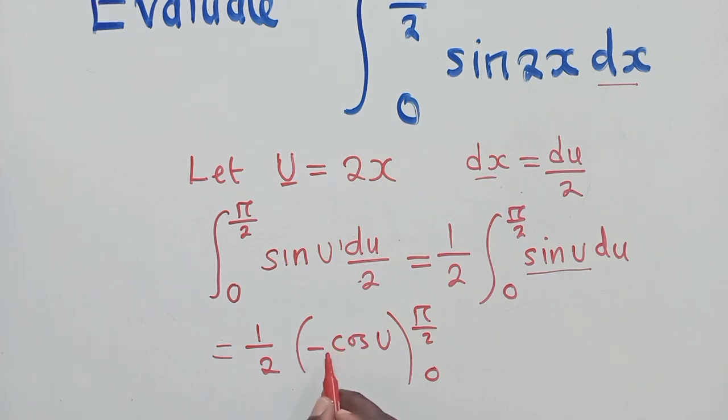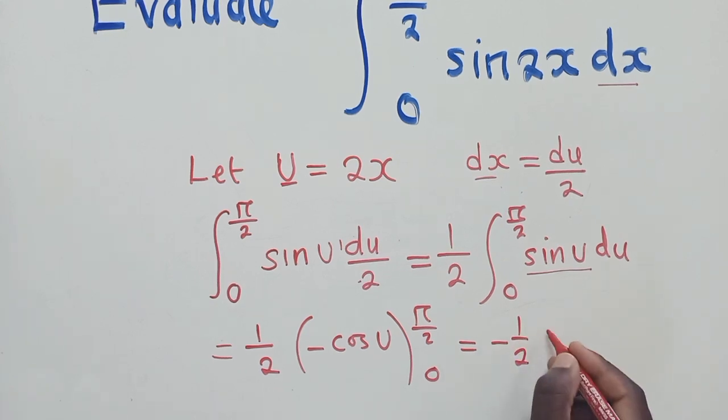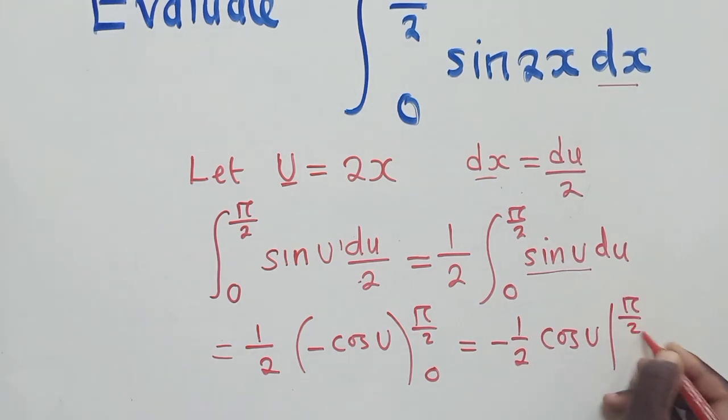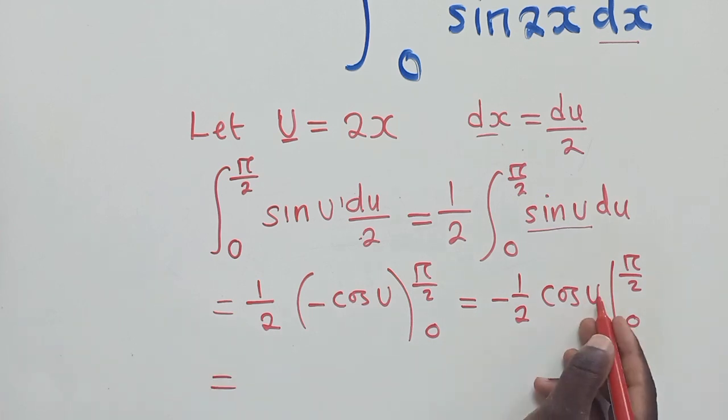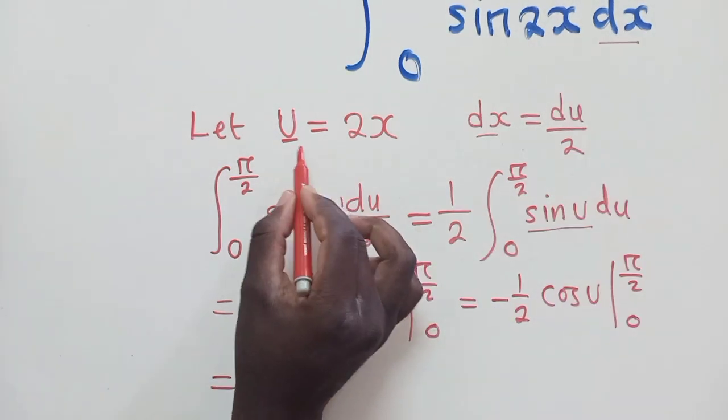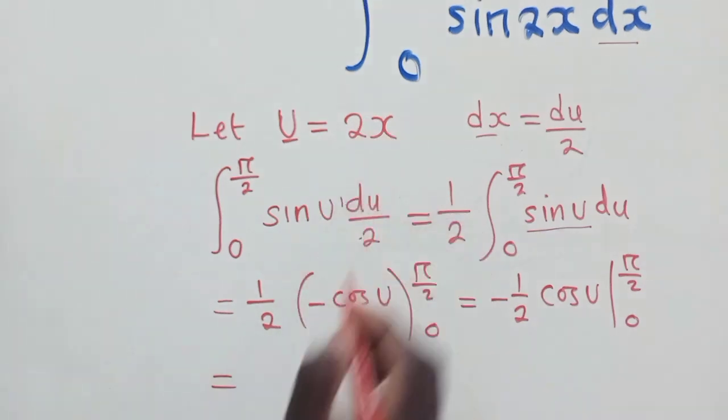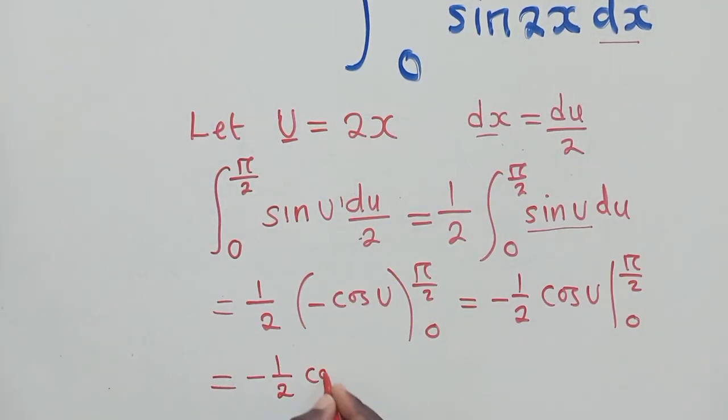So now we can substitute this negative, since it's a multiplication here, it can come outside. So it will be negative 1 over 2. And here we have cos u from π/2 to 0. So now we substitute. We substitute back the u. Remember, u is what? It's 2x. So it will be negative 1 over 2 cos 2x from π/2 to 0.